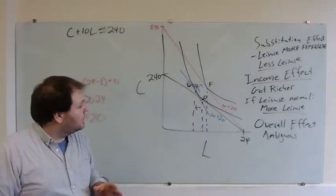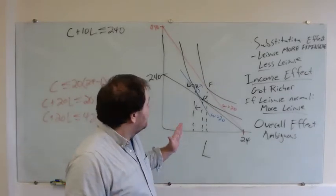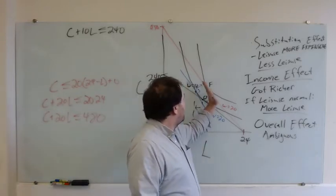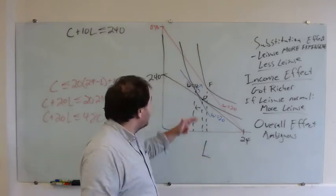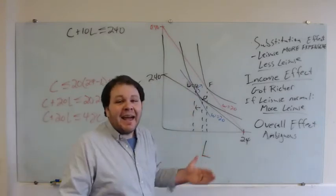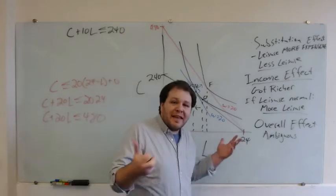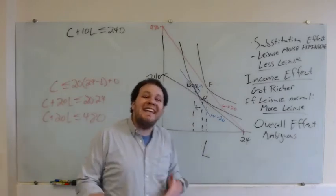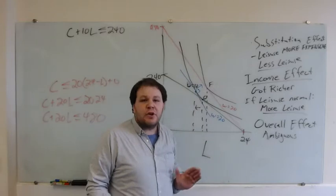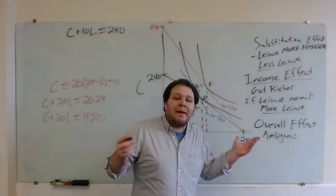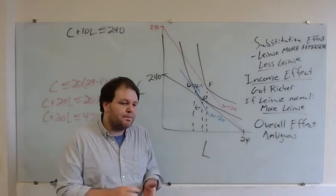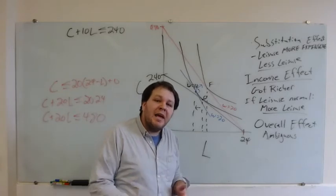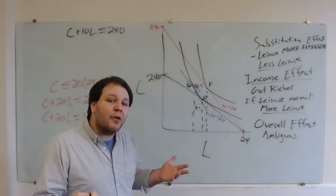When leisure is a normal good, we have two countervailing forces. When our wages go up, the substitution effect says: now that leisure is more expensive, let's substitute away from leisure and towards consumption — hire a cleaning service instead of cleaning your apartment, get takeout instead of cooking, drive instead of walking. On the other hand, the income effect says: now that I'm on a better indifference curve, why do I need to spend all my time working — why not enjoy life a little more?